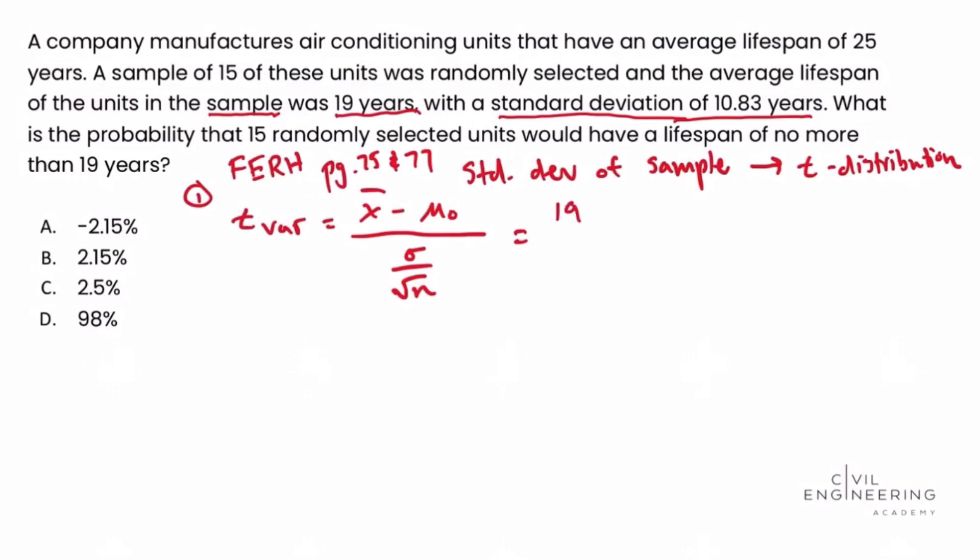So write that in minus mu naught. Mu naught is the population mean. And the population mean in this case was given in the problem statement as an average lifespan of 25 years is the population mean.